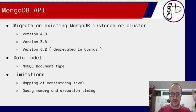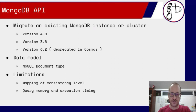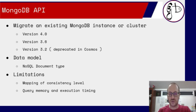What are the limitations of the MongoDB API? First, the mapping against the consistency level, which you need to consider if you want to scale your application worldwide. Second, query memory and execution timing — in Cosmos DB there is a fixed memory allocation and a fixed execution time per query.